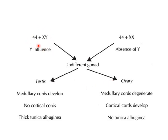In the 44+XY genetically male embryo, Y chromosome influence causes the indifferent gonad to form testes, where medullary cords develop and there is no cortical cord, and there is a thick tunica albuginea. In the absence of Y chromosome, the 44+XX female embryo, the indifferent gonad forms an ovary. In the ovary, the medullary cords degenerate, the cortical cords develop, and there is no tunica albuginea.